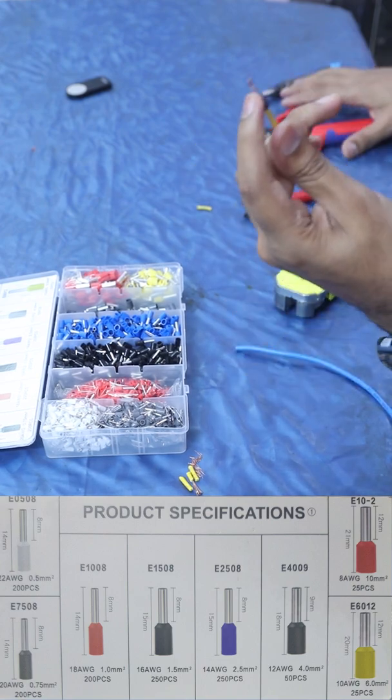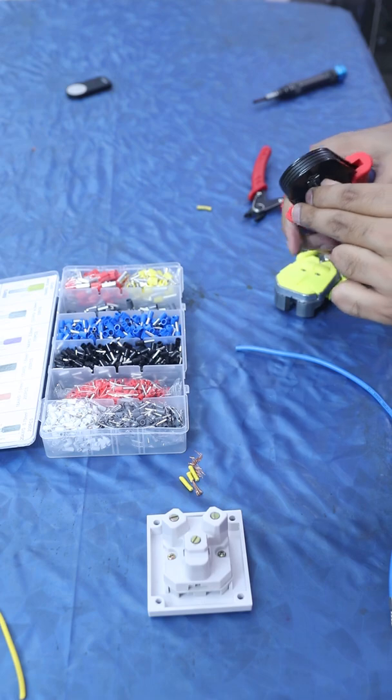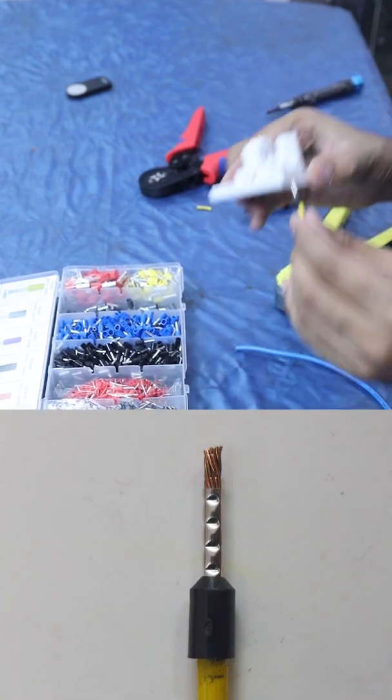Slide it in. I do have a bit more wire exposed than I should, but then you crimp that in and now you have a crimped connection which can be utilized in screw terminals without any issue of fraying.